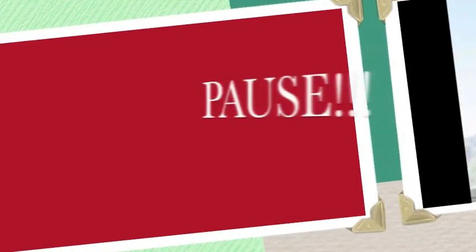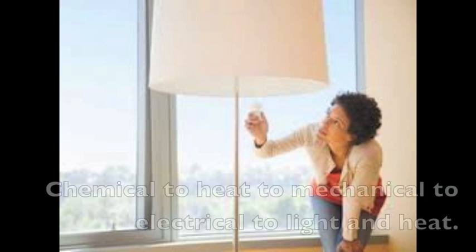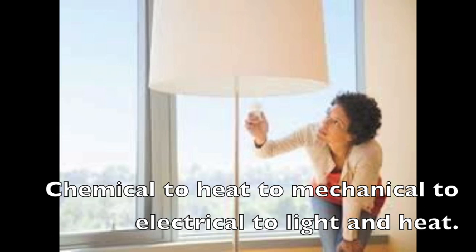If it has to do with electricity, it starts with chemical, to heat, to mechanical, to electrical. Again, assuming that the electricity from your house comes from a power plant. At the power plant, the fuel is burned, which is chemical. It gives off heat, which moves the generator, which is mechanical. And then, the generator changes the electricity into light and heat.